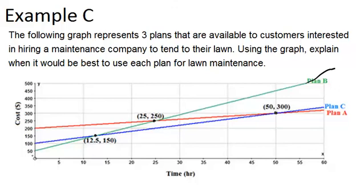So let's think about how long is plan B the cheapest because it starts out being the cheapest right here and it's the cheapest all the way until this point right here and at this point 12.5 hours it's the same cost as plan C the blue line and after that plan C is actually the cheapest.